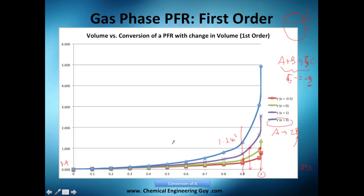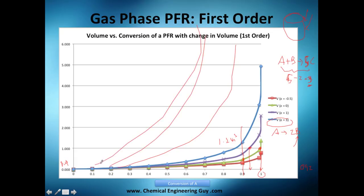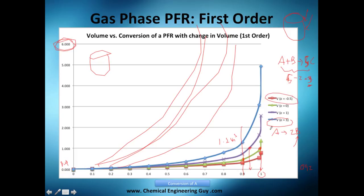As epsilon grows even larger, achieving high conversions becomes extremely difficult and economically unviable — you'd need enormous reactors, so you'd likely change reactor design or process conditions. Conversely, when epsilon is negative (moles decrease during reaction), less volume is needed for the same conversion, which is favorable. That covers the first order gas phase PFR analysis.